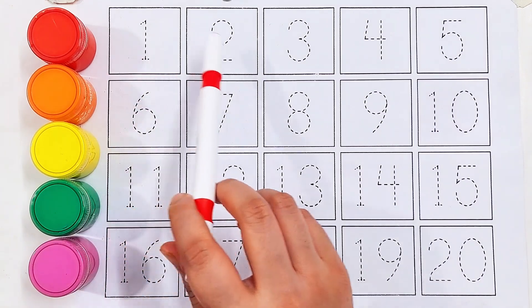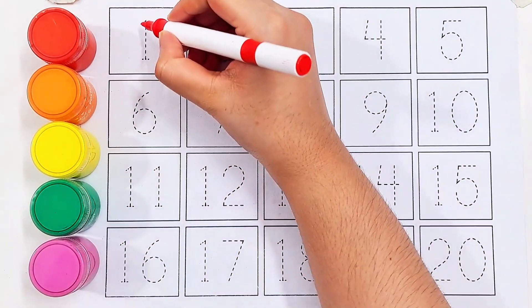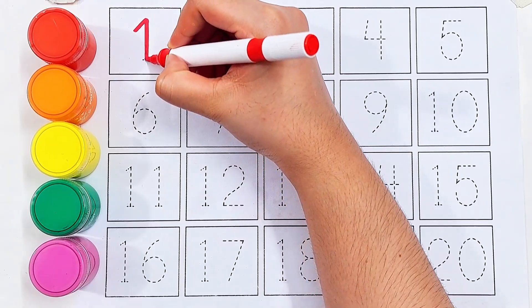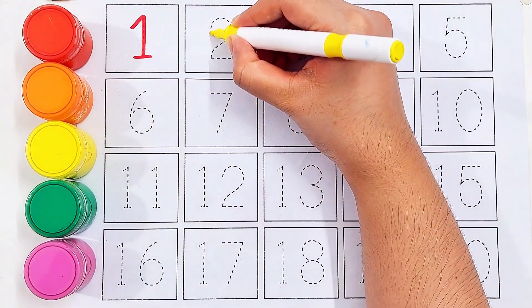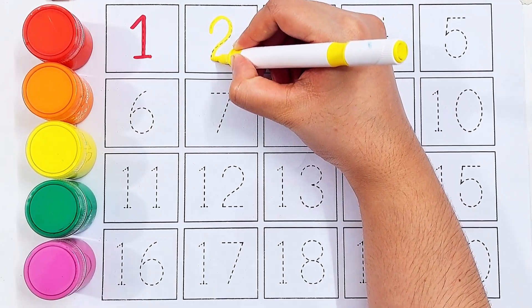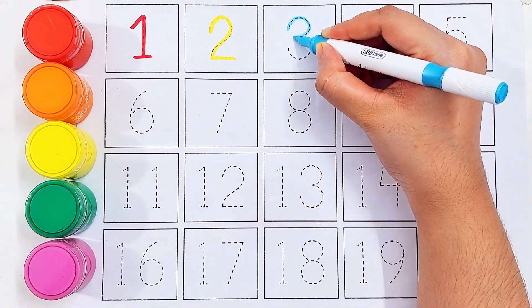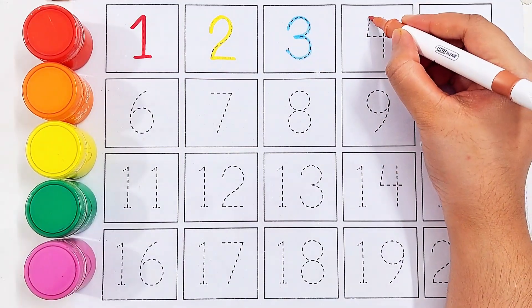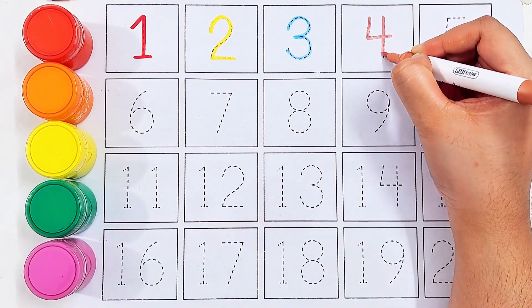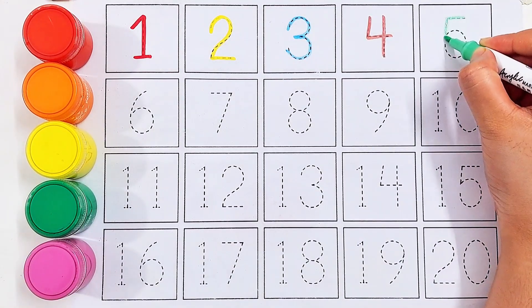learn some numbers. One, two, three, four. Number one. Number two. Number three. Number four. Number five.